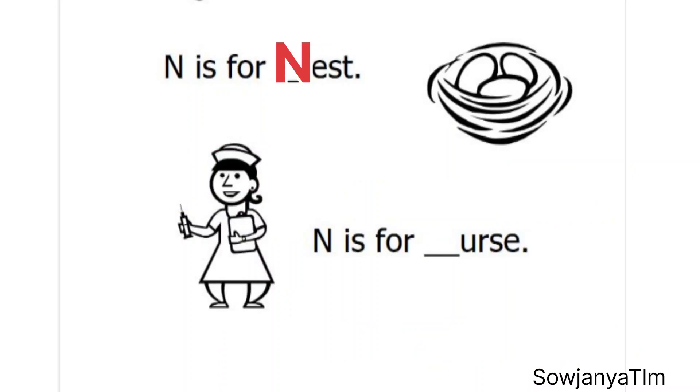What do you see in this picture? Yes, there is a nest in the picture, right? So fill the letter N in the given blank and read it. N-E-S-T, nest. N is for nest.